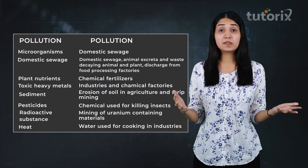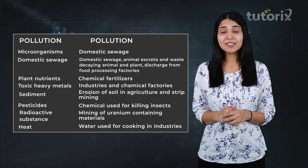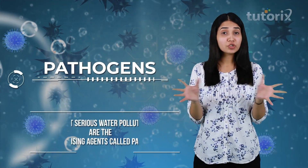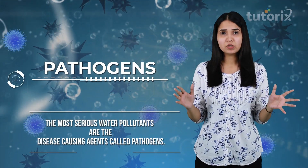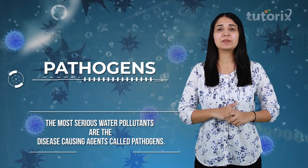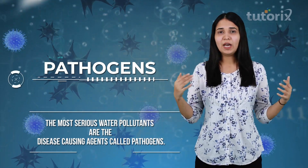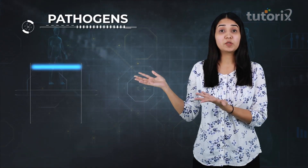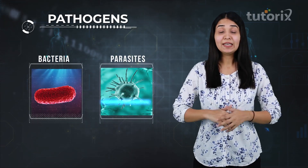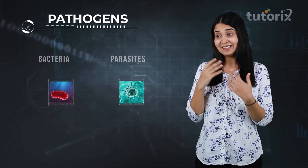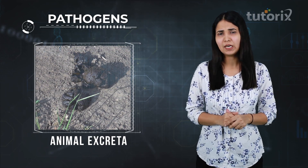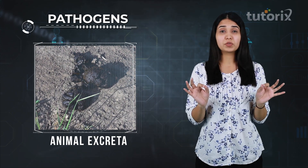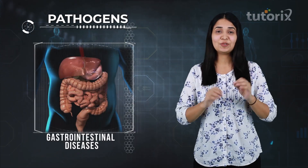Let's discuss stepwise these pollutants and how the water gets polluted because of them. First of all, let's discuss pathogens — the most common disease-causing agents. The examples are various types of bacteria, parasites, and even certain organisms present in animal excreta. Not just animal excreta, but even in human excreta, like E. coli and Streptococcus, which cause gastrointestinal diseases.